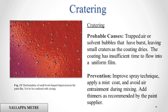Cratering. Probable causes: trapped air or solvent bubbles that have burst, leaving small craters as the coating dries. The coating has insufficient time to flow into a uniform film. Prevention: improve spray technique, apply a mist coat, and avoid air entrainment during mixing. Add thinners as recommended by the paint supplier.